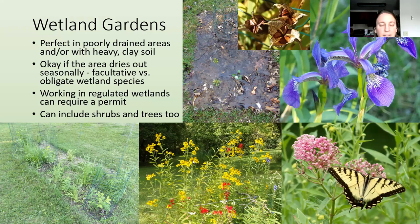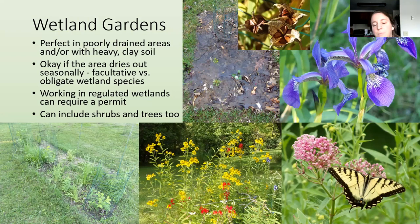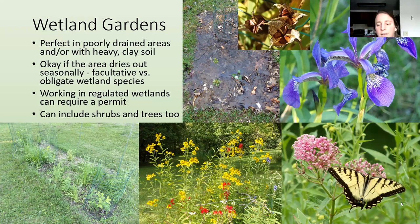There's red cardinal flower, some white turtlehead — which bumblebees really like — and blue lobelia, which bumblebees also pollinate, and Virginia mountain mint in the back. Those are all good wetland plants. Then swamp milkweed, which is obviously another host plant for monarch butterflies and also good for other pollinators.